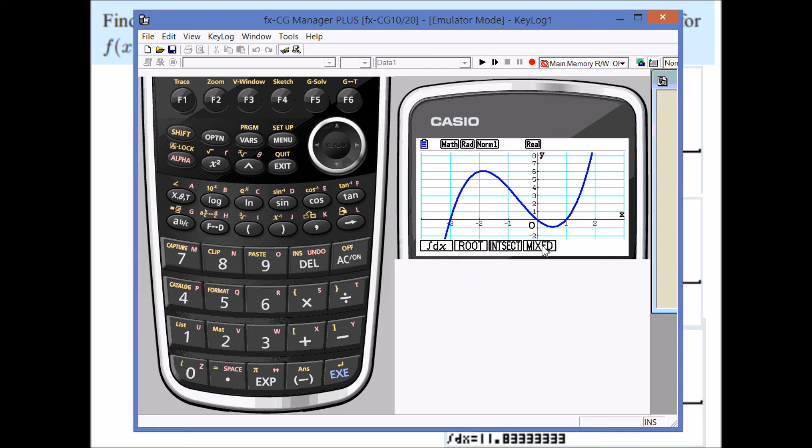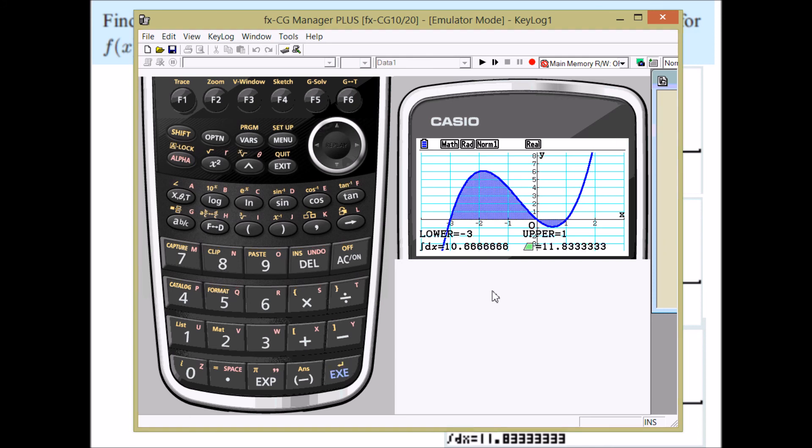If I go for mixed here. It's highlighted already negative 3. So I can execute on that. If I then push across. And I want the final root of 1. Execute on that. It highlights it.